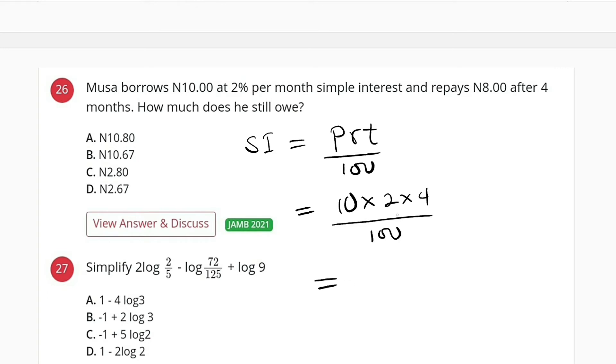So we have 10 times 2, 20 times 4 is 80, divided by 100, which is equal to 0.8.